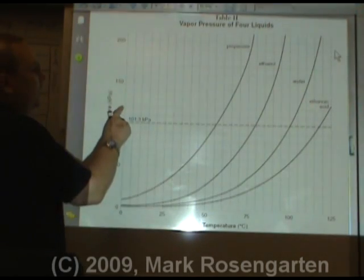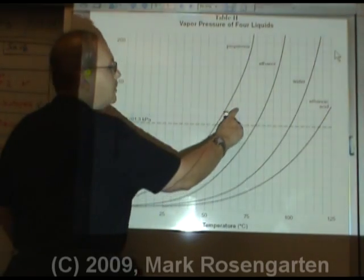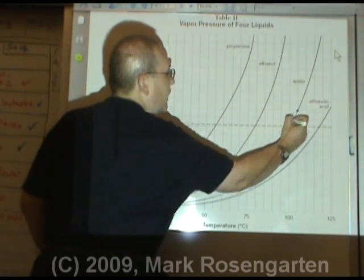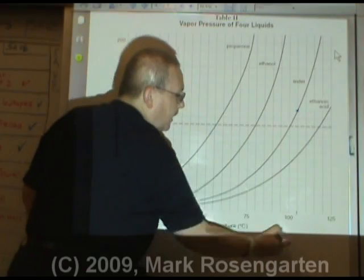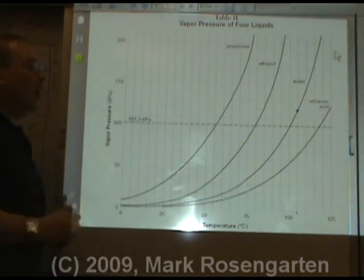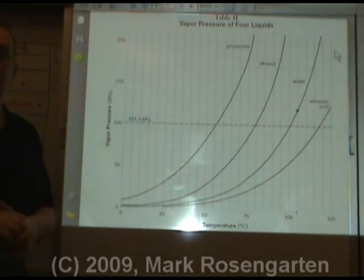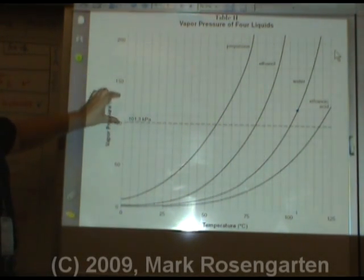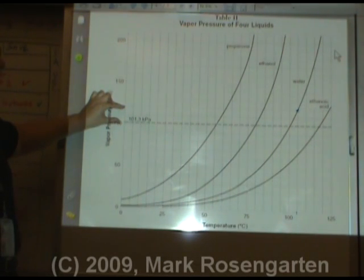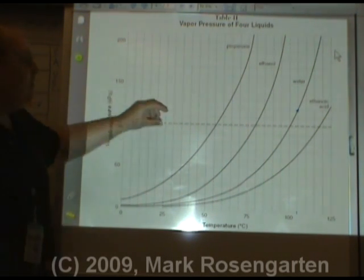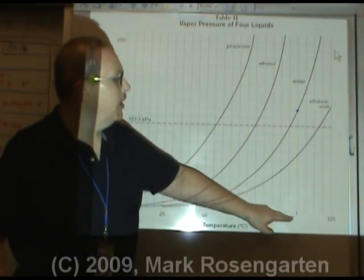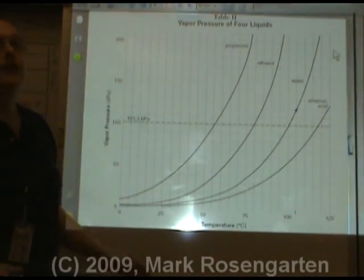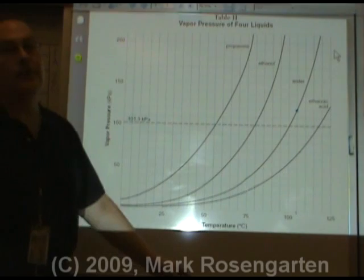What is the boiling point of water under a pressure of 120 kilopascals? We find 120 kilopascals on the y-axis, go across to the water line, and drop down to the temperature axis. That puts it at about 104 degrees Celsius. By raising the pressure to 120 kilopascals, we make the boiling point go up from 100 to about 104 degrees, so you're cooking at a hotter temperature.